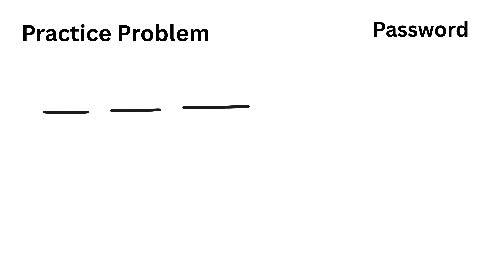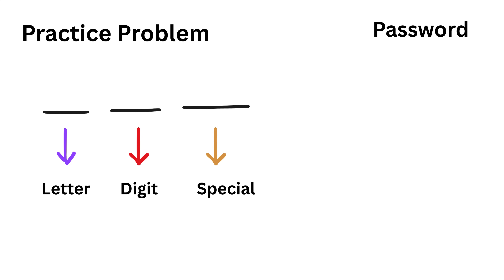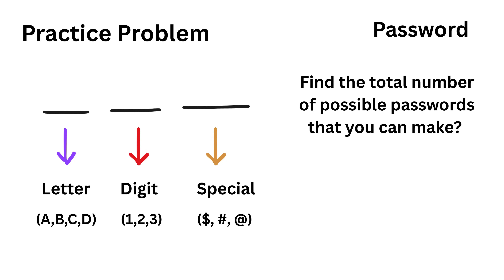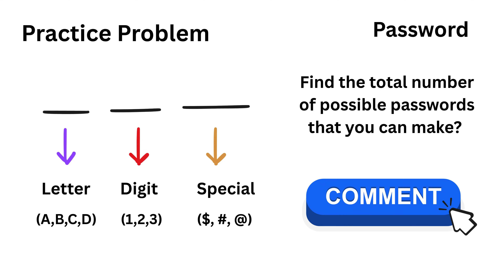Let us see if you can solve this. Imagine you are creating a password that has one letter followed by one digit, followed by one special character. Suppose the letter can be any of four letters — A, B, C, D — the digit can be any of three digits — one, two, and three — and we can have three special characters only. Can you find the total number of possible passwords? Let me know your answer in the comments.